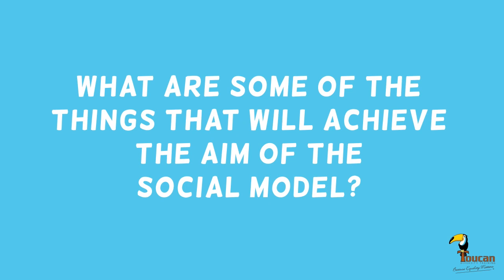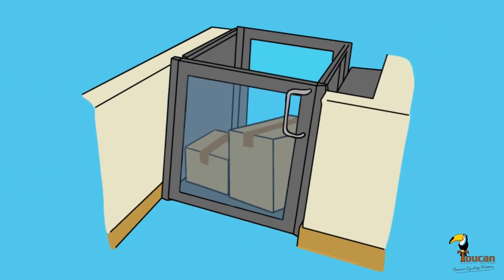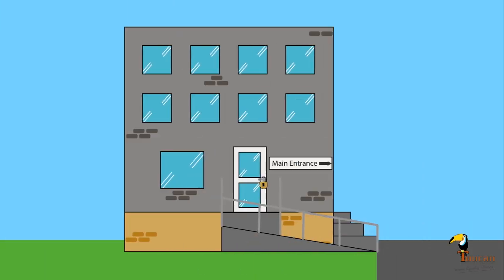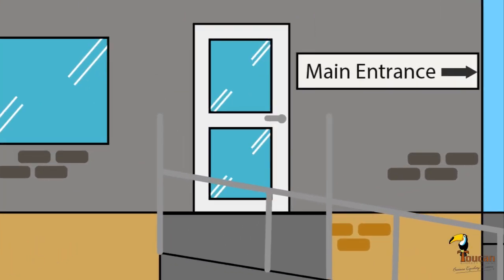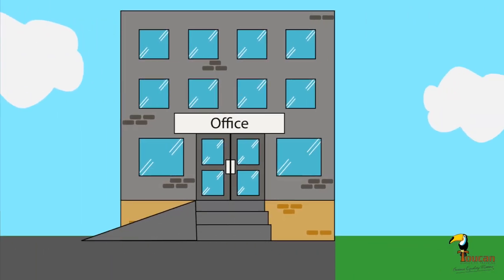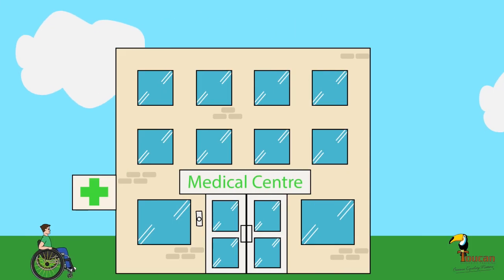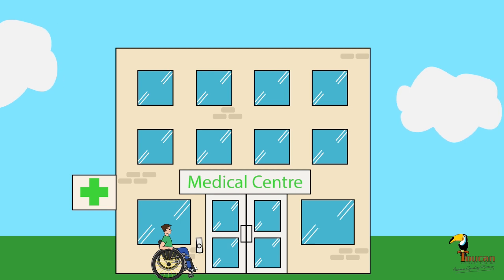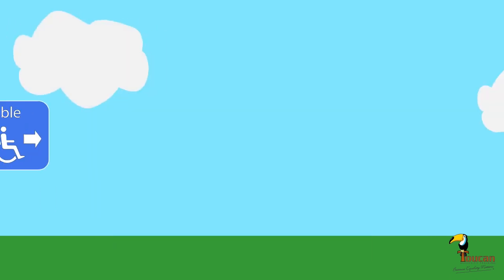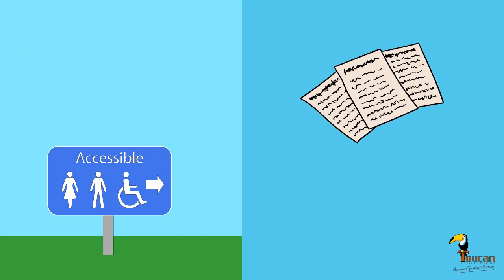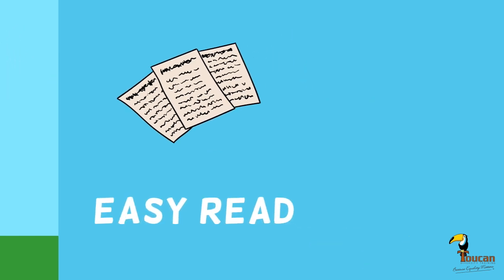What are some things that we can do that will help to achieve the aim of the social model? Ensure that lifts are used for their purpose and not as additional storage spaces. Keep a side entrance unlocked and accessible. Make sure ramps are at an appropriate incline and usable. Place buzzers lower down for access at all height levels. Use accessible signage. Have written materials available in different fonts and formats such as easy read.